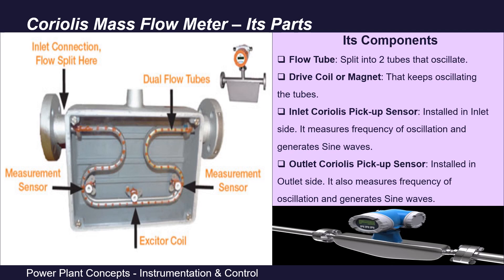The third important parts are the sensors. Two sensors — called Coriolis pickup sensors — are installed in the Coriolis flow meter. One sensor is at the inlet side and the other is on the outlet side of the tube — one upstream of the exciter coil and one downstream. These sensors measure the oscillating frequency and generate sine waves. Other parts include the casing and flange connections at the inlet and outlet side to install it in the process pipeline.